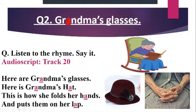Question number two: Grandma's glasses. Look at grandma — she's wearing glasses, a hat, and folding her hands when she is sitting. Here are grandma's — grand, A sound, it is underlined. Grandma's glasses. Here is grandma's hat. This is how she folds her hands and puts them on her lap. The words grandma, hat, hand, and lap all have the A sound in the middle.